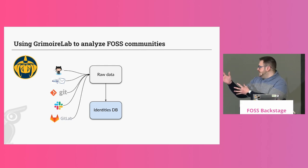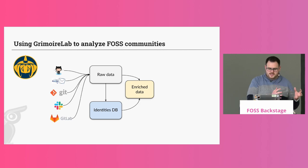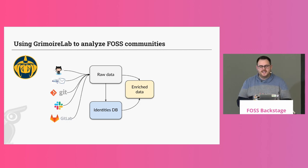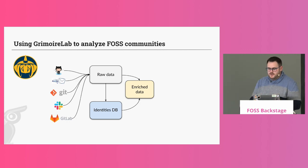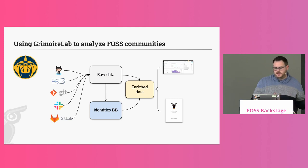We get the raw data from the sources we are analyzing, then we build an identities database, and we produce an augmented set of enriched data — which is the data from the sources plus the identity information plus other data massaging we can do to ease later analysis. With this enriched data we can produce dashboards, reports, and extract metrics from the projects and different tools they're using.